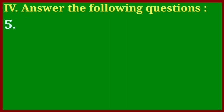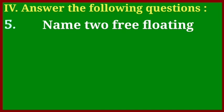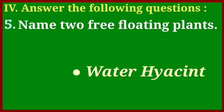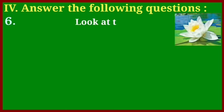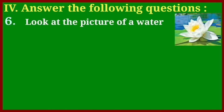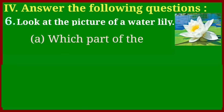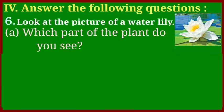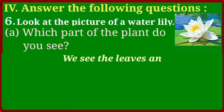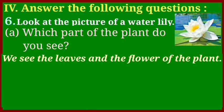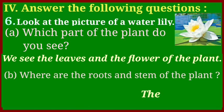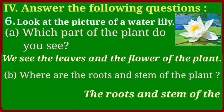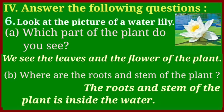Question number five: name two free-floating plants — water hyacinth and pistia. Question number six: look at the picture of a water lily. Which part of the plant do you see? We see the leaves and the flower of the plant. Where are the roots and stem of the plant? The roots and stem of the plant are inside the water.